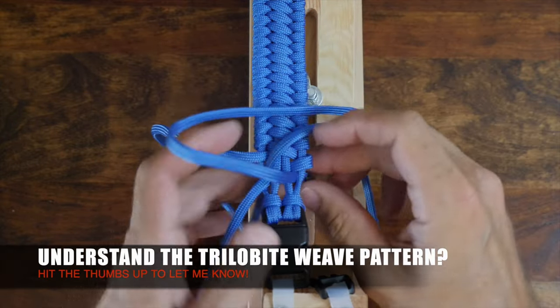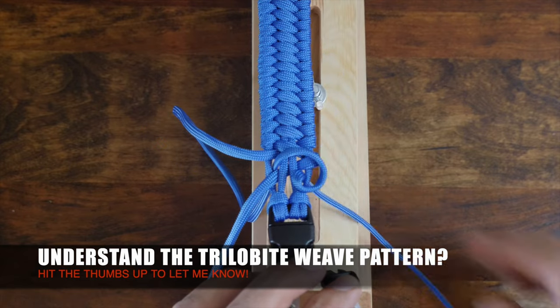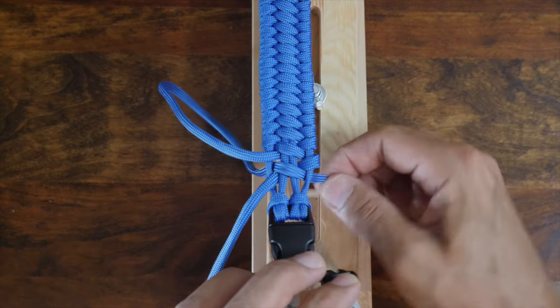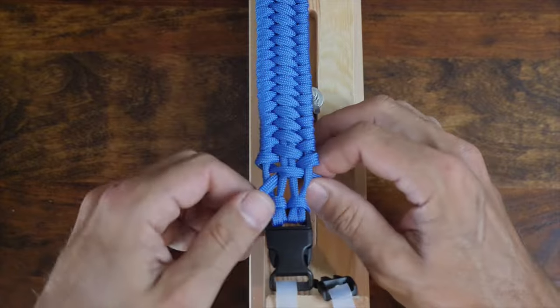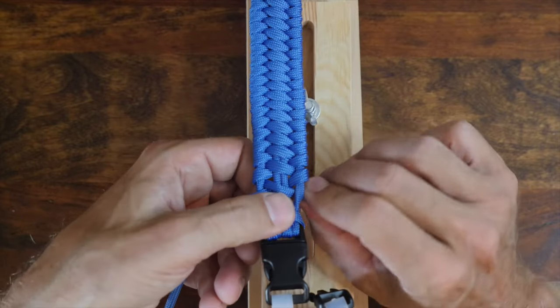If you understand the weave pattern now, hit the like button. When we reach the end of the bracelet, we'll complete our last full weave with both strands of paracord.